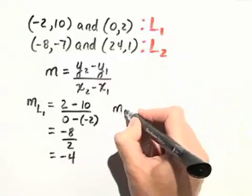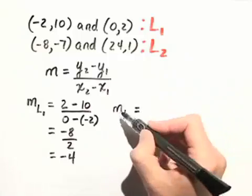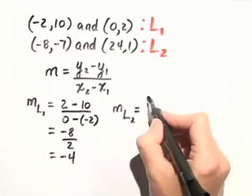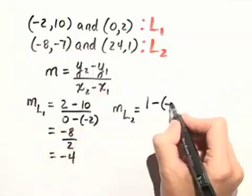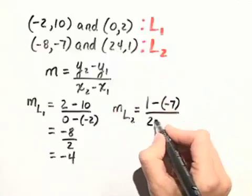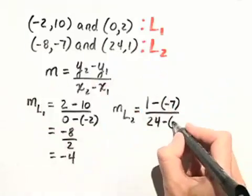Now let's find the slope of our second line and compare them. The slope of L sub 2 is y sub 2, which is 1, minus y sub 1, which is negative 7, over x sub 2, which is 24, minus x sub 1, which is negative 8.